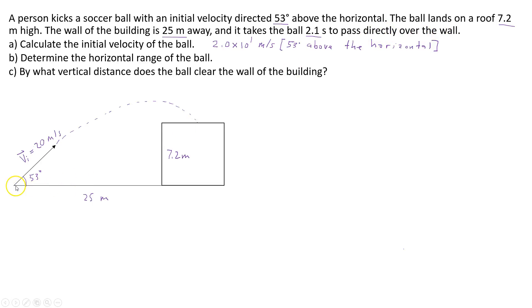So the ball is initially kicked from a distance of 25 meters away from the wall of this building. The height of the building is 7.2 and the ball passes the wall of the building and lands on the roof of the building.